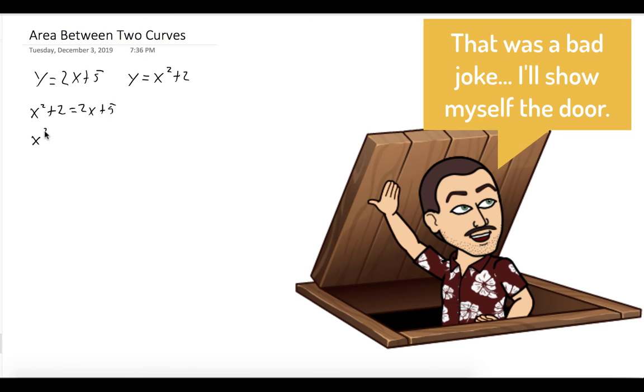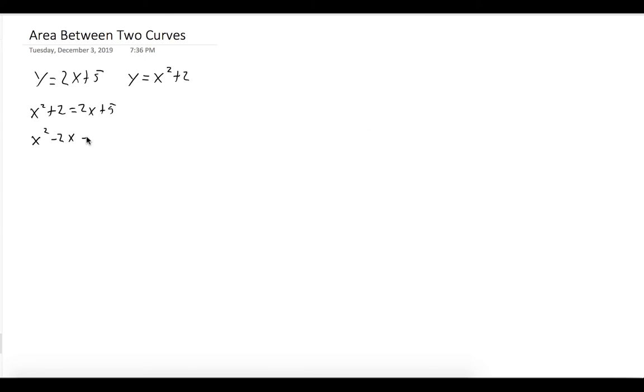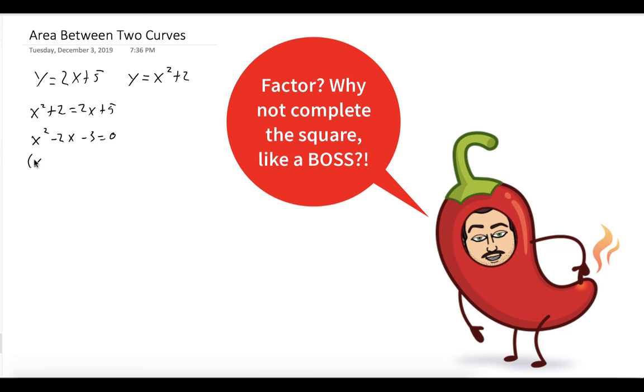So x squared plus 2 equals 2x plus 5. Bring all the terms to one side, and you can see we could easily factor this to x minus 3 times x plus 1. Set it equal to 0 and solve. We get x equals negative 1 and 3.